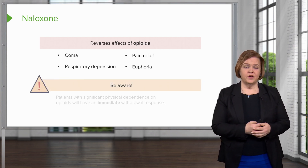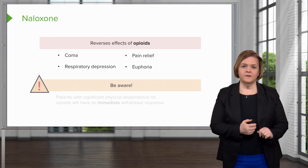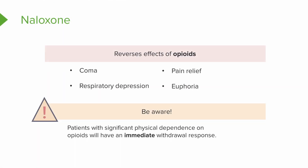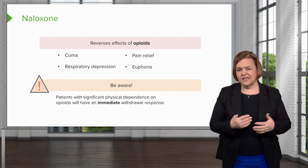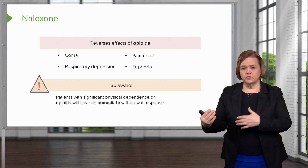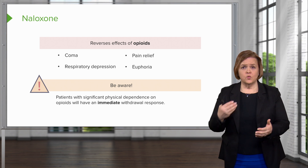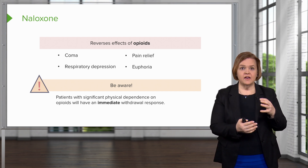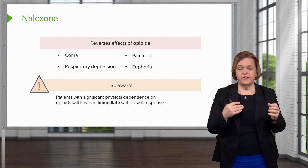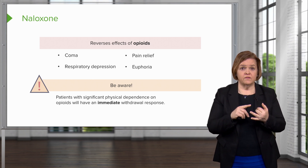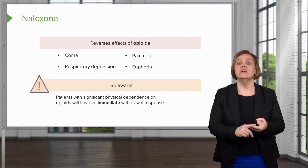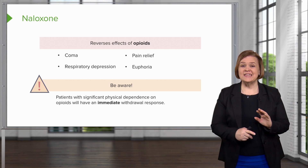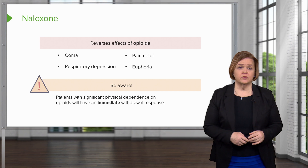Here's another reason they're not really excited. Be aware: if somebody has significant physical dependence on opioids, they will have an immediate withdrawal response. When someone rolls into the ER with an opioid overdose and we give them naloxone, they wake up and come right out of that coma, they start breathing faster, they have no pain relief, no euphoria, and they start feeling horrible.